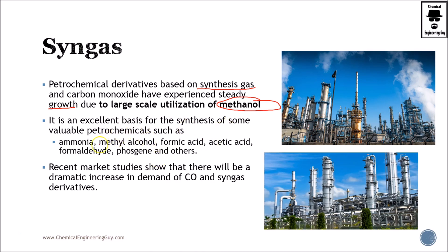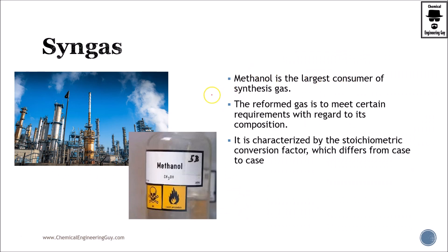Specifically for methanol, it is an excellent basis for the synthesis of valuable petrochemicals — ammonia, methanol, formic acid, acetic acid, and so on. Recently, market studies have shown there will be a further increase in syngas and all syngas derivatives. Why? Because petroleum is going down, so eventually what you want to do is convert coal into syngas.